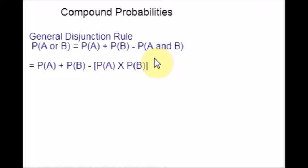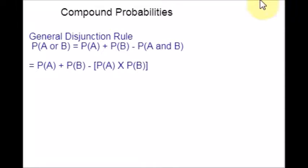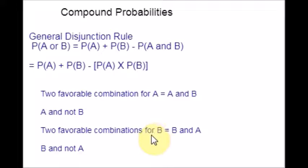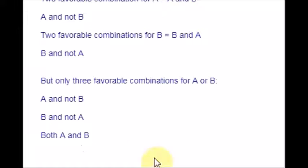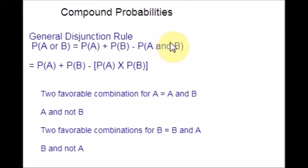We subtract the probability of both events occurring because we don't want that combination to figure into the calculation twice. If the events are not exclusive, there are two ways to get A (with and without B) and two ways to get B (with and without A). But there are only three favorable combinations for A or B: A and not B, B and not A, and both A and B. So we need to negate the combination of A and B occurring together — that is the reason we subtract it in the formula.